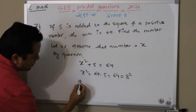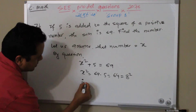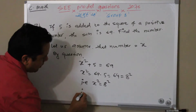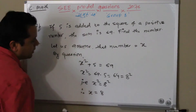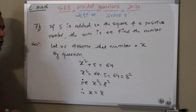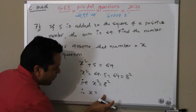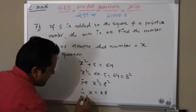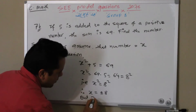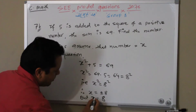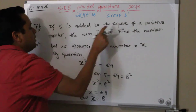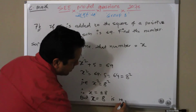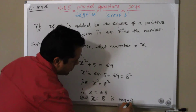So x² = 8². Therefore x = 8, because we only need the positive number. There is a possibility you could write x = ±8, but we need the positive value, so we don't need the negative. The positive number, x = 8, is your answer — the required number.